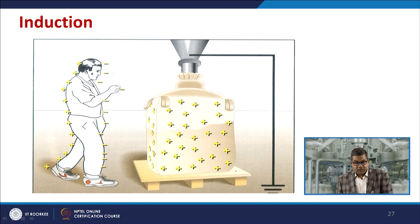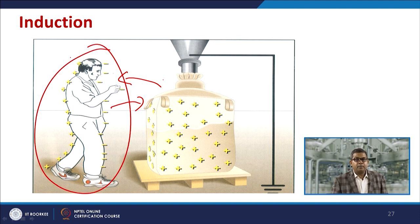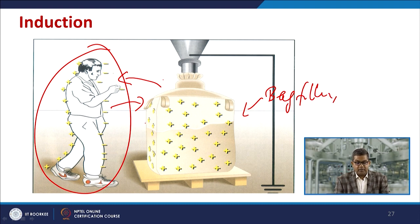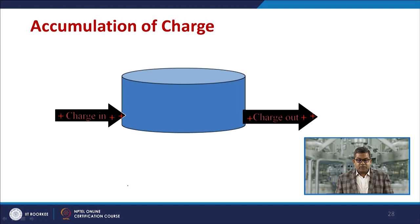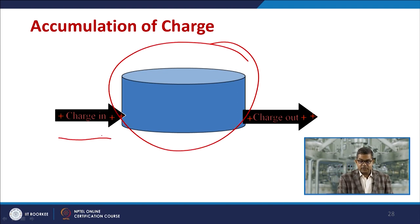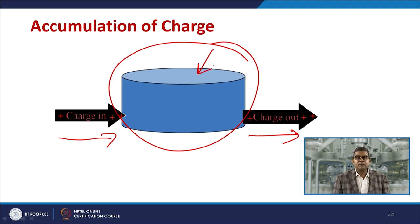Charge may transfer from one surface to another through induction. For example, a person who was previously neutrally charged may, through proximity to a backfilling operation generating positive charge, have that charge transferred to their body and potentially experience spark generation. Additionally, charge accumulation may occur in a static vessel where charge-in and charge-out are balanced, yet charge accumulates internally and may pass to another surface.